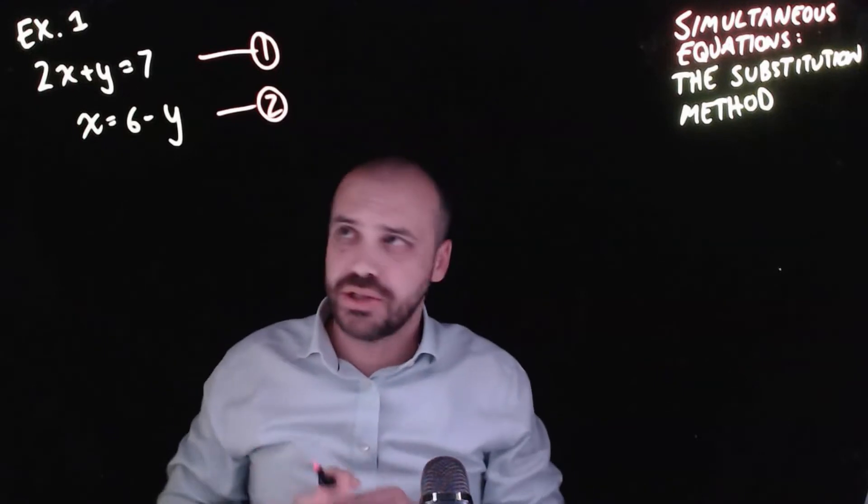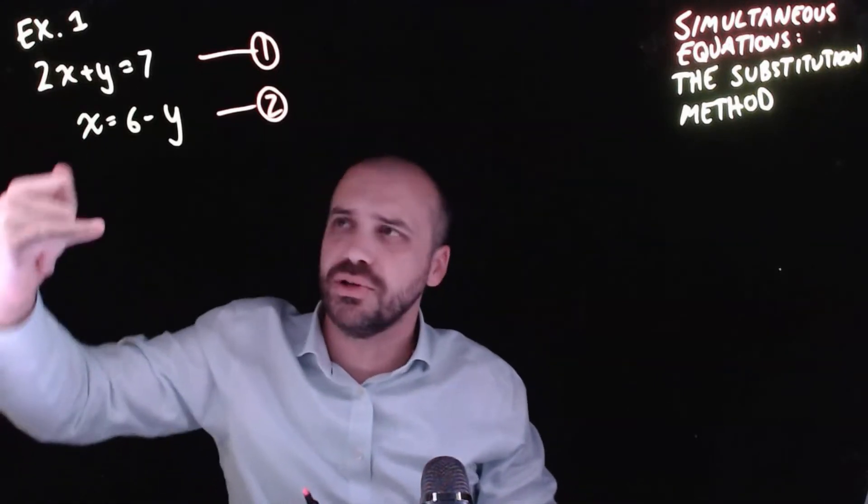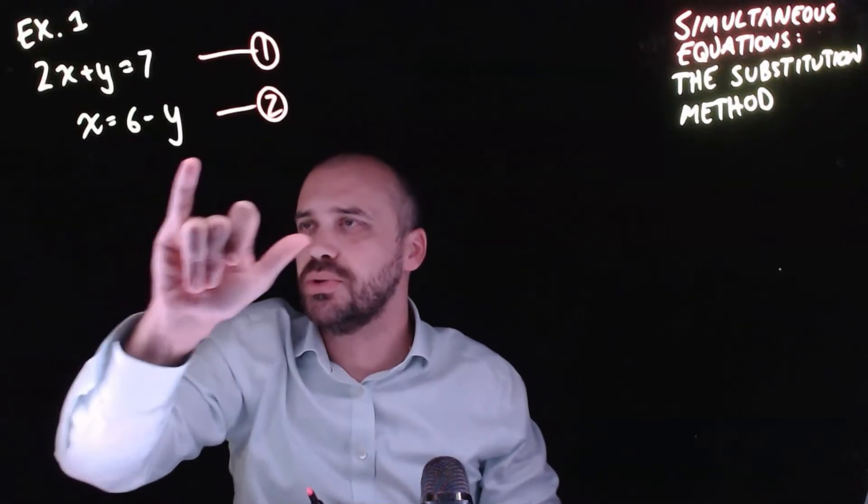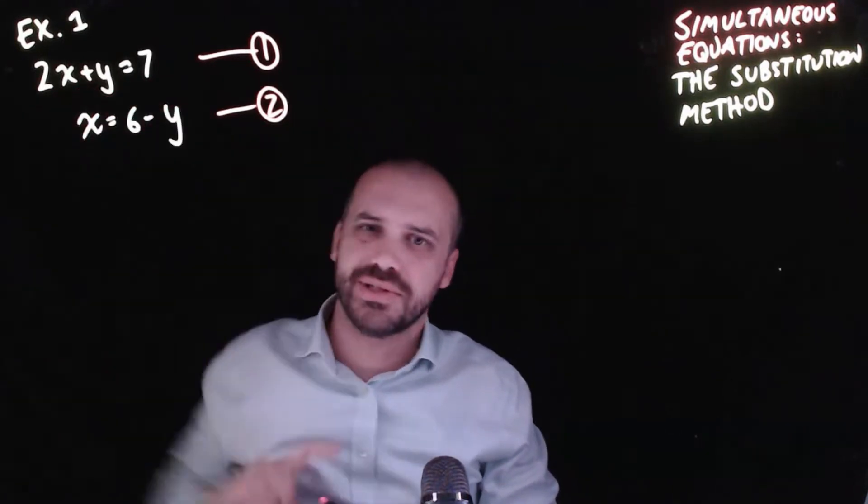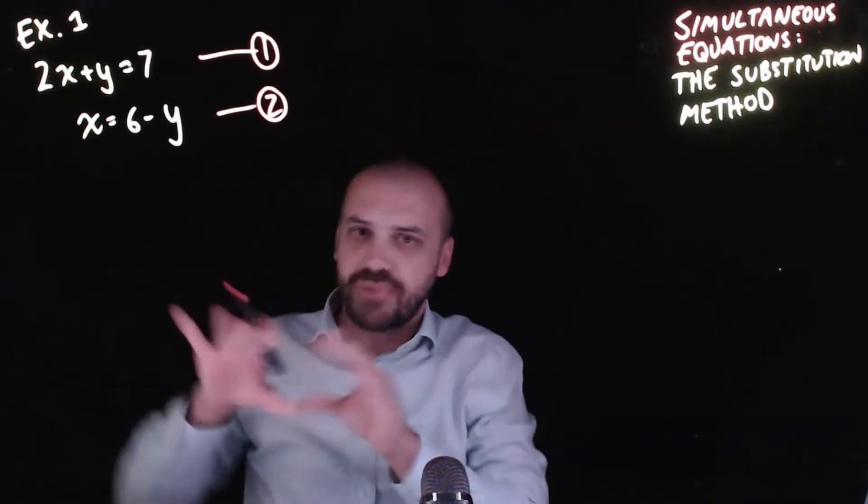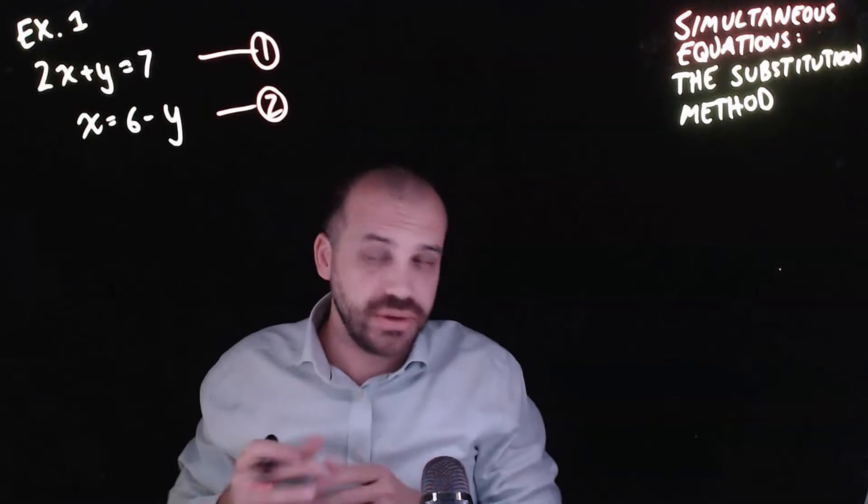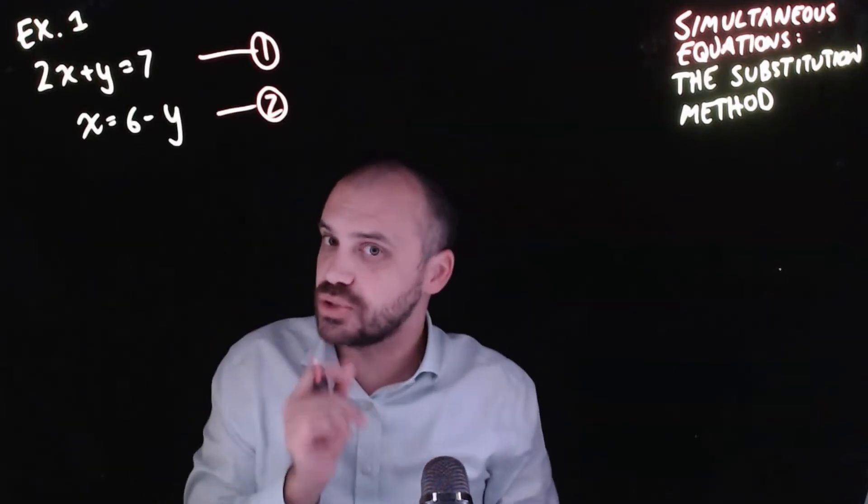Now, unlike the elimination method, I don't have my variables lined up neatly. I've got an x all by itself here, x = 6 - y, and on this one I've got 2x + y = 7. Now I could rearrange this, make the variables line up, and use the elimination method, but let's use the substitution method.